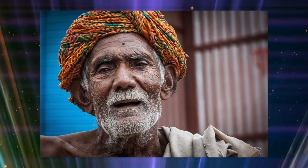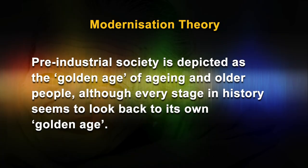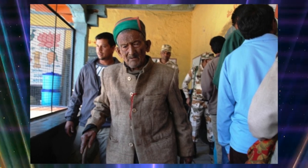Modernization Theory: The position of older people in pre-industrial society is usually described as one of respect and authority. Typically, pre-industrial society is depicted as the golden age of aging and older people, although every stage in history seems to look back to its own golden age. This stereotypical view of the past is usually contrasted with their position in modern society, where older people are thought to be worse off because they are consigned to meaningless retirement, neglected by their family, and ignored by the prevailing youth culture. Cowgill and Holmes developed these ideas further, defining the process of modernization by four parameters.